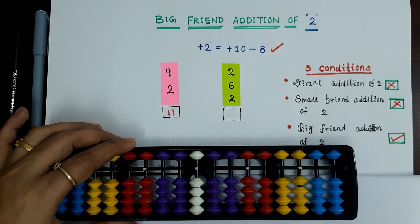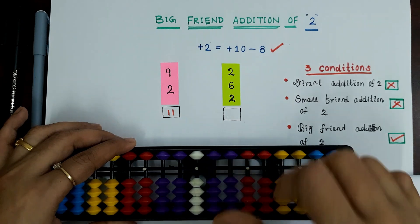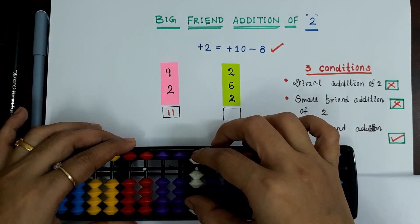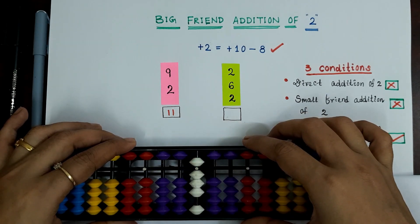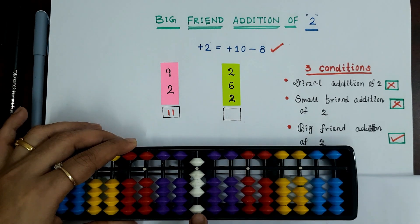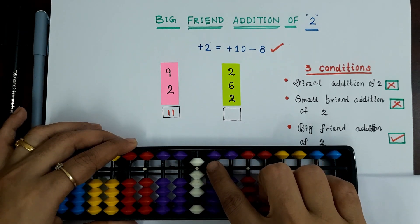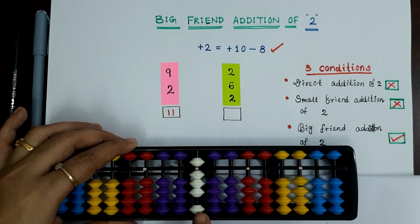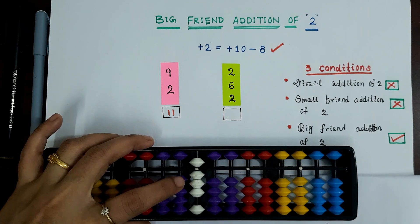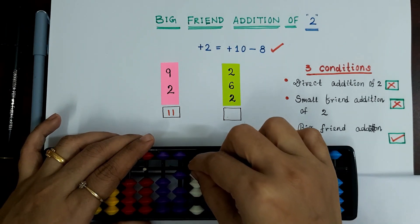Let's solve the second example which is 2 plus 6 plus 2. Here we cannot do direct addition of 2 because we don't have 2 more bits. Also, we can't use the small friend addition of 2 as we have already used the upper bits. So small friend addition of 2 is also not possible. Here we have to apply the big friend addition of 2, so let's apply the formula: plus 2 is plus 10 minus 8.